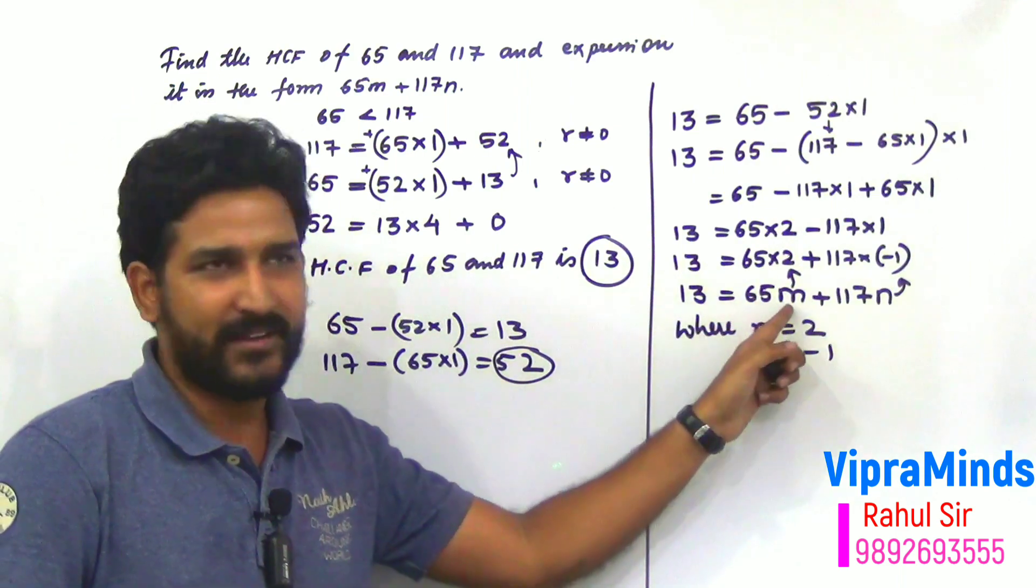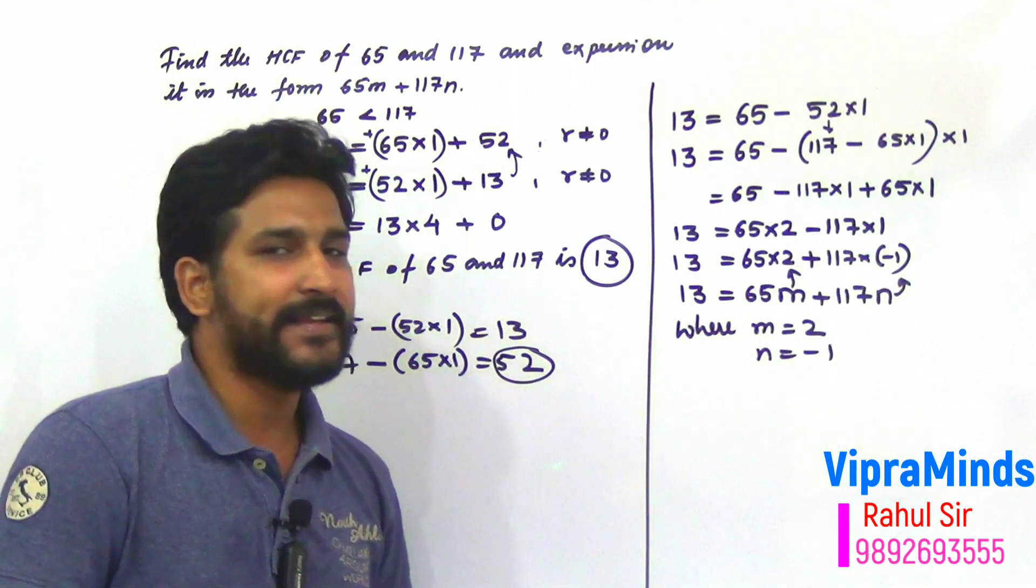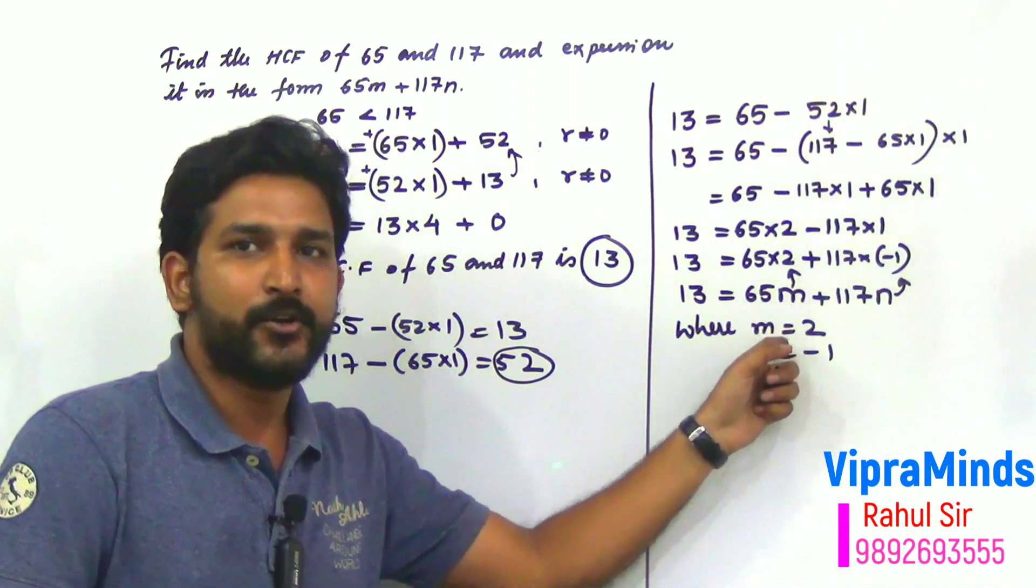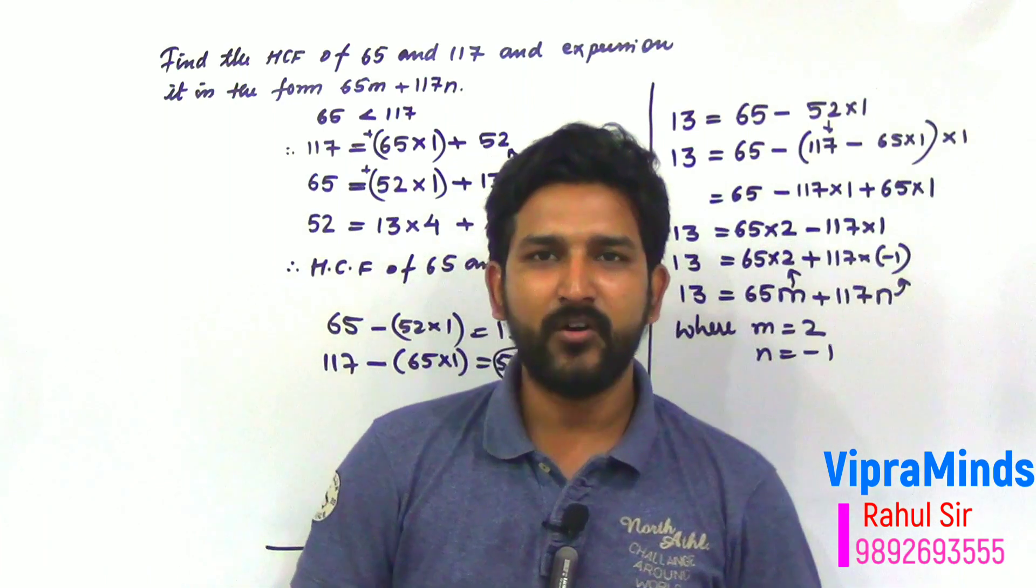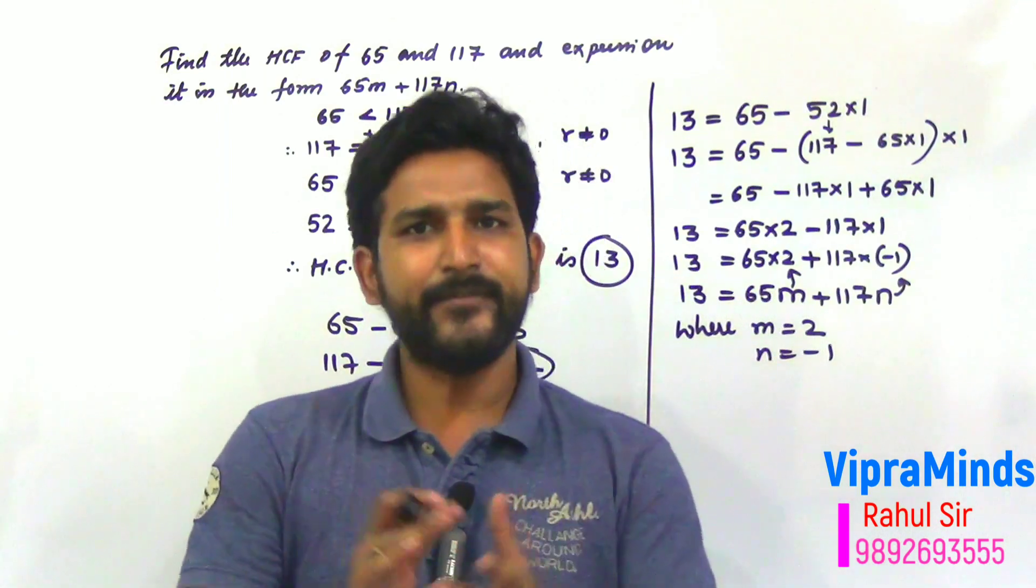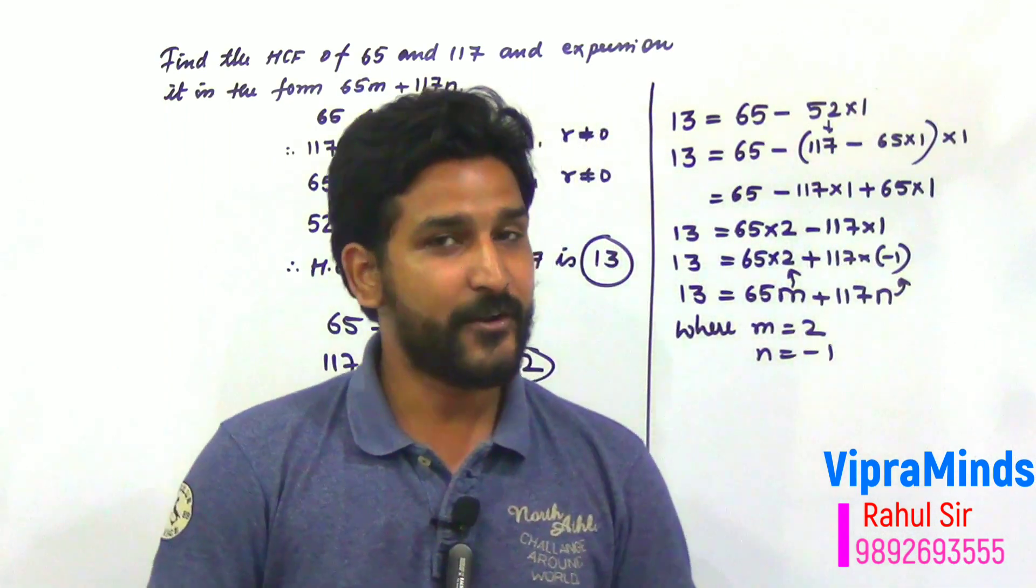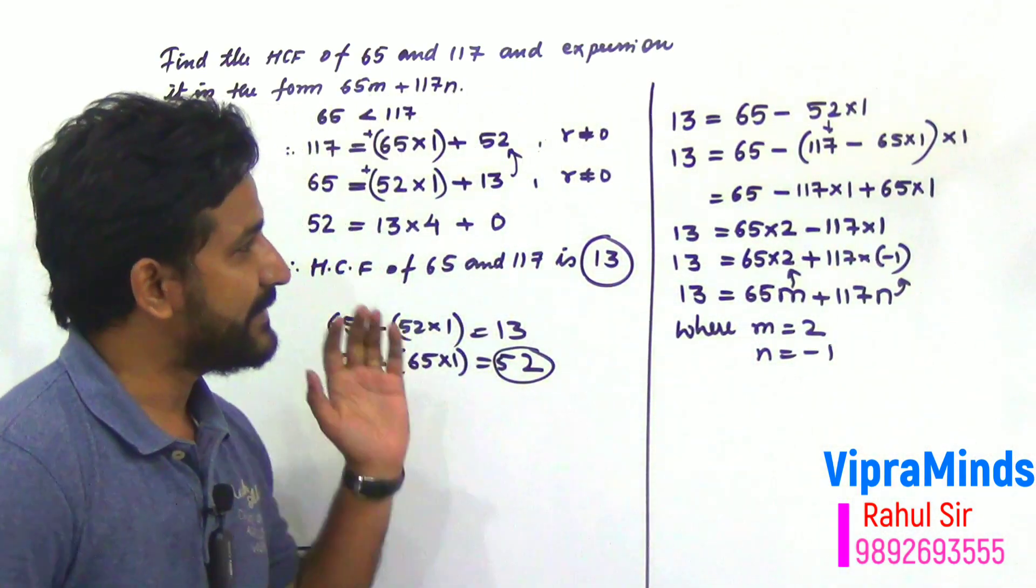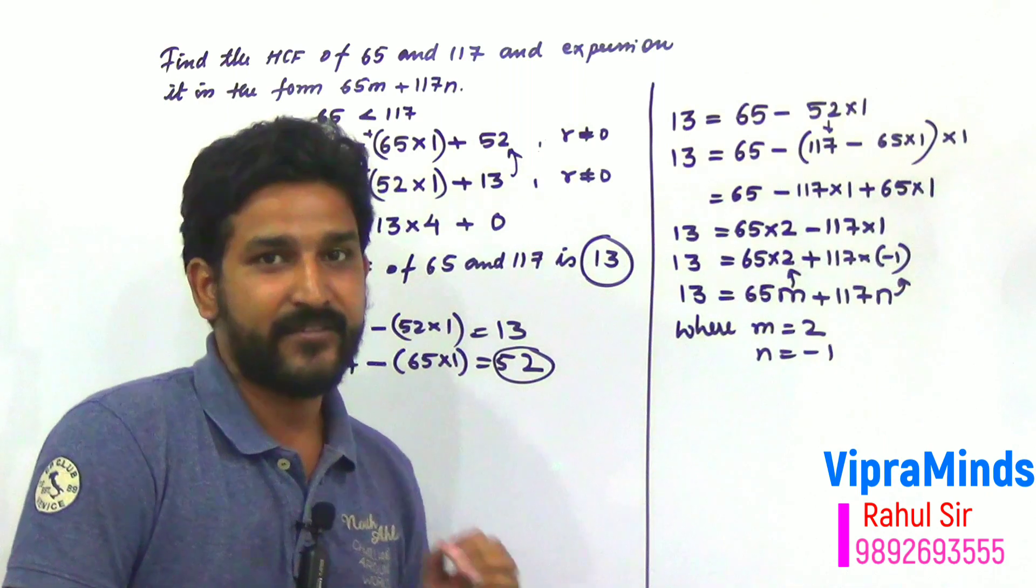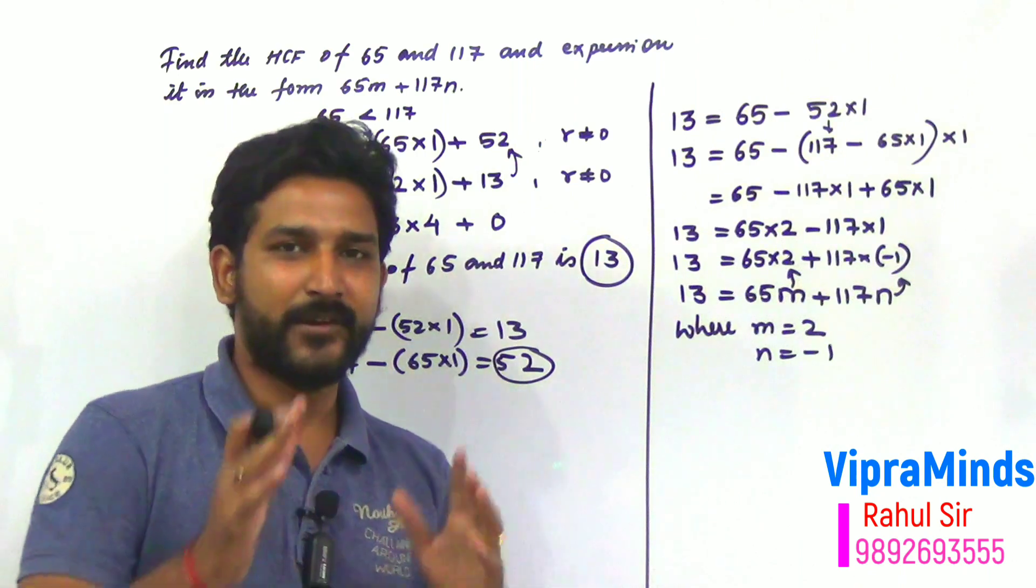Therefore, 13 equals to 65M plus 117N. This is a linear combination form. This is how we can express the HCF of the numbers in linear combination form. M and N values are 2 and minus 1. If you have any doubt, you can write in comment section. Hope you have understood and you can refer our previous video also, the first example where we explained the basic method for such type of questions. Hope it will be helpful for you. Thank you.